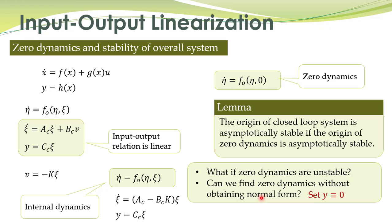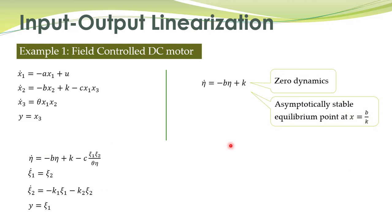We can obtain the zero dynamics by setting y, the output of the system, to be identically equal to zero. This symbol means identically zero — that is, zero for all time. Let's apply this to the same example and directly study the stability of zero dynamics.